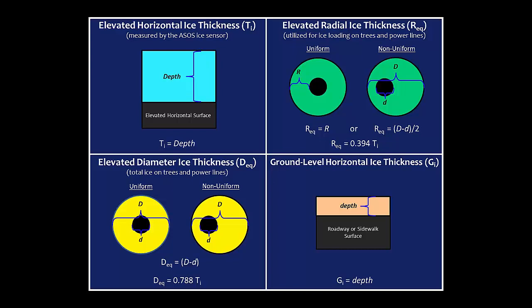Another measurement is the total ice thickness — whatever the ice is minus the object diameter — which is twice the amount of a uniform radial thickness. A lot of measurements taken in the field and in storm data seem to refer to this total ice thickness. And then there's ground-level horizontal ice thickness for roads and sidewalks, which is totally different from what occurs on elevated surfaces.